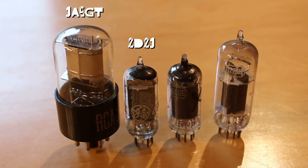Then we have a 2D21 thyratron. Then we have the 6AU6 pentode. This is one of my favorite tubes. And then we have a 12BH7 dual triode.